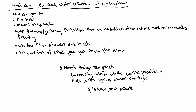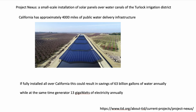One way to prevent evaporation is Project Nexus, a small-scale installation of solar panels over water canals of the Turlock Irrigation District in California. California has approximately 4,000 miles of public water delivery infrastructure, and the plan is to cover these canals with solar cells to prevent evaporation while generating clean electricity. If fully installed across California, this would save 63 billion gallons of water annually while generating 13 gigawatts of electricity annually.